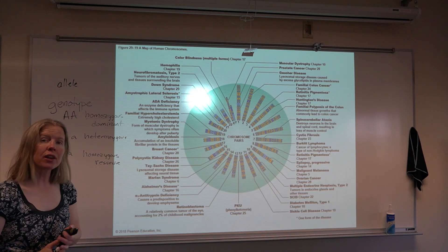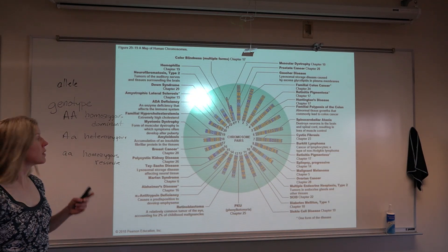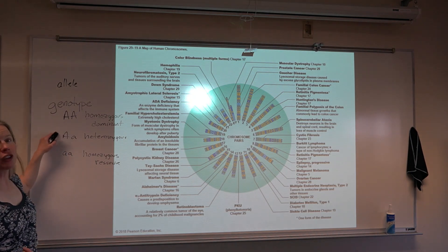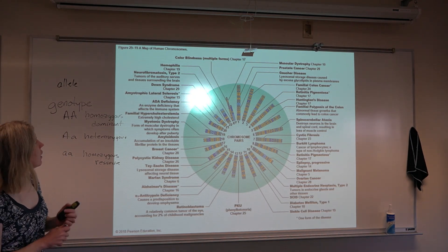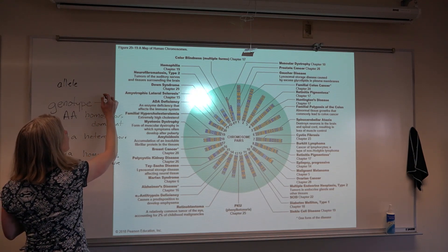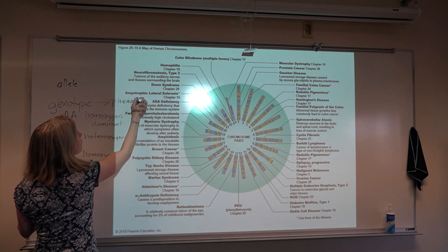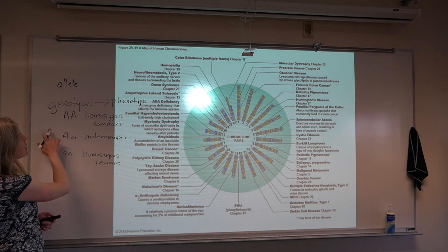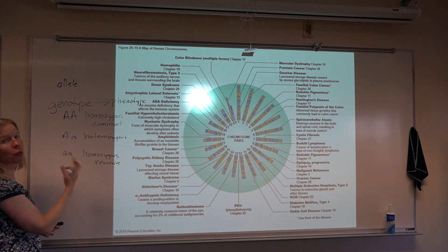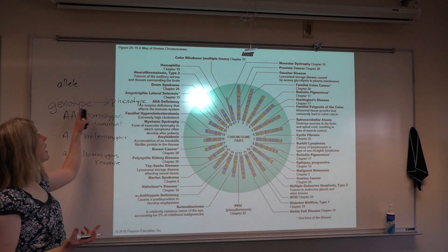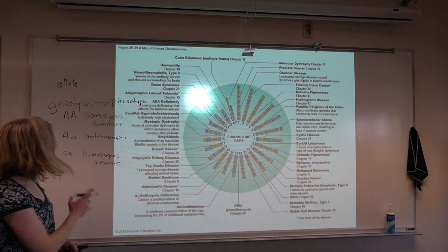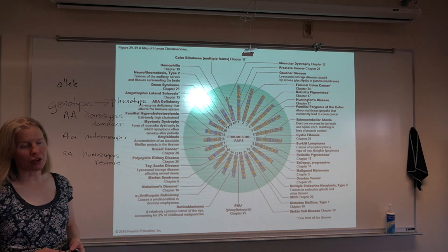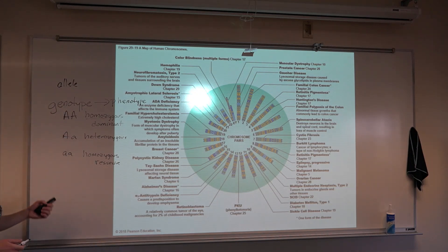Someone might be what we call homozygous dominant. Homo meaning same, they have the same version of the gene, the same allele. The allele is just the version of the gene. So in this case, they have two copies of the dominant gene. An individual who is heterozygous has two different versions, two different alleles. And then you can also have homozygous recessive. Those are all potential genotypes.